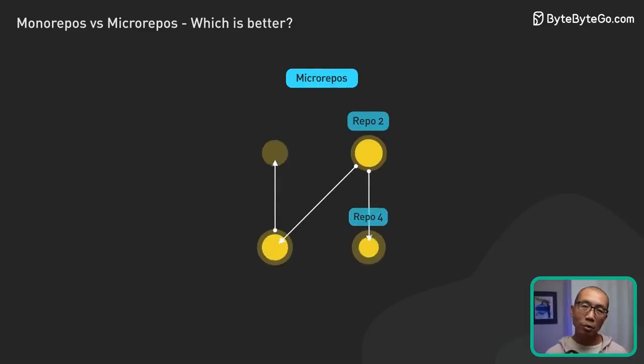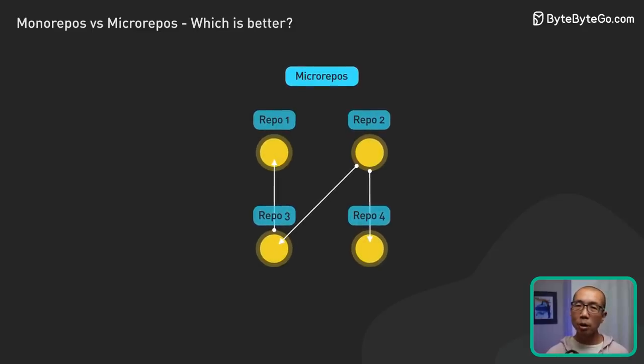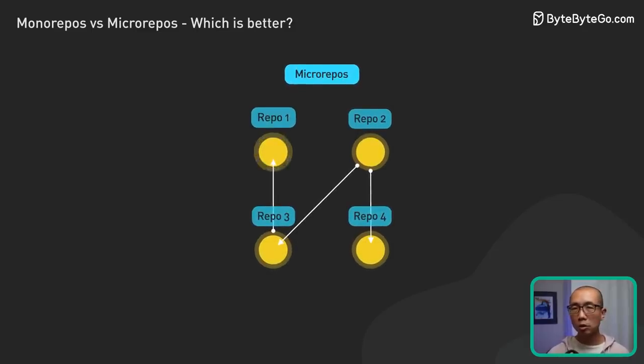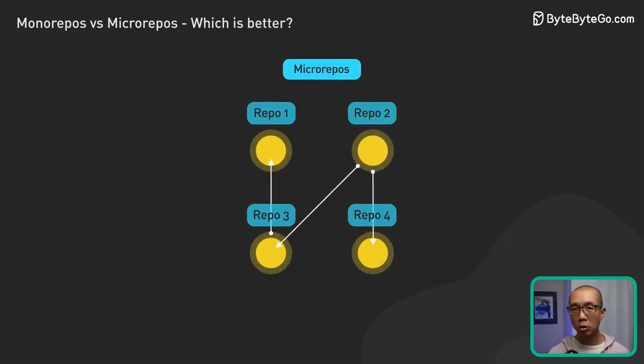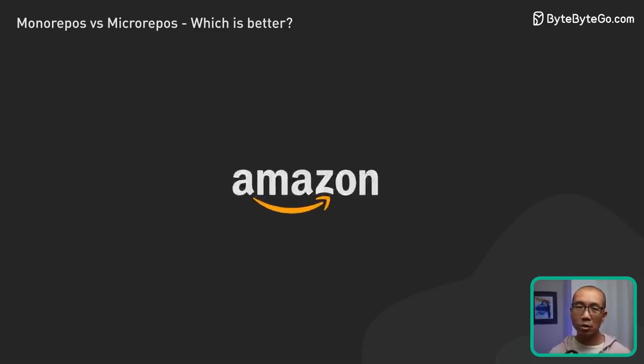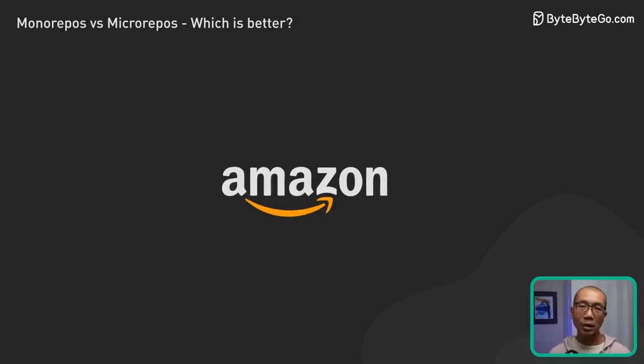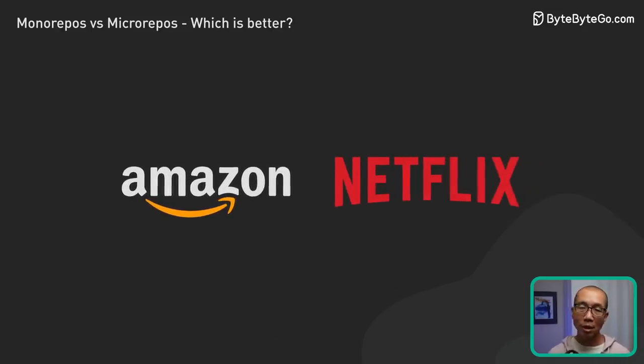Now let's switch gears to micro-repos. This approach treats each component or service as an independent entity with its own separate repository. Organizations such as Amazon and Netflix have embraced this decentralized method.